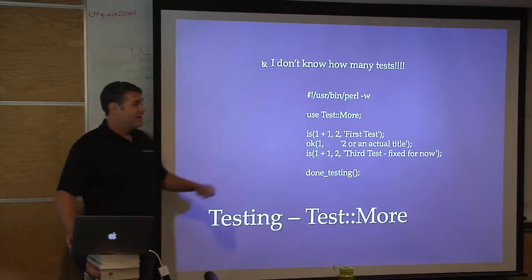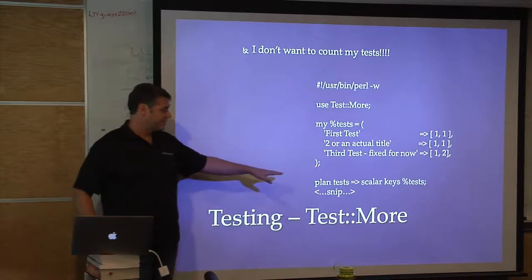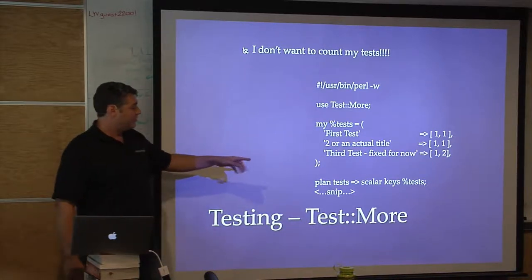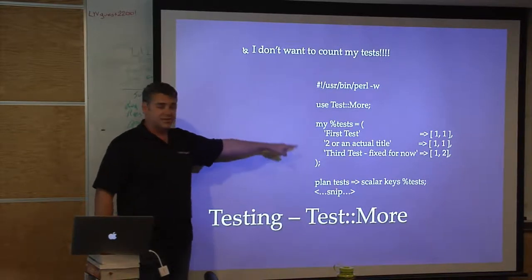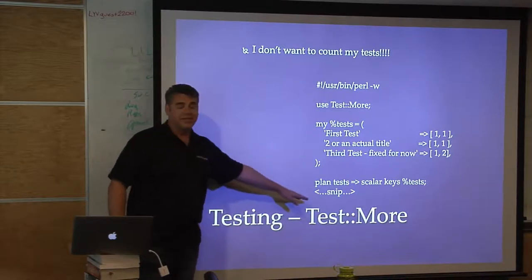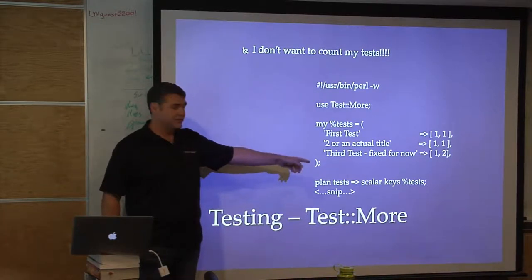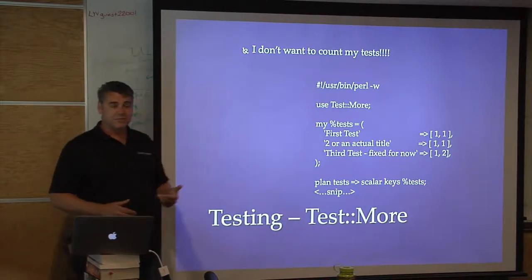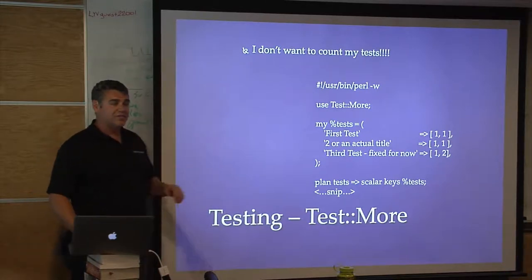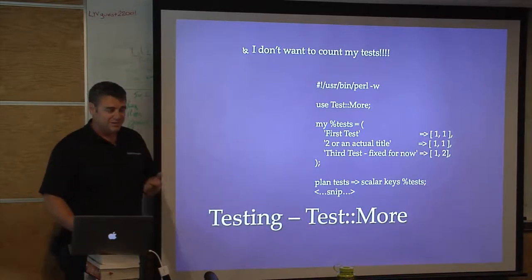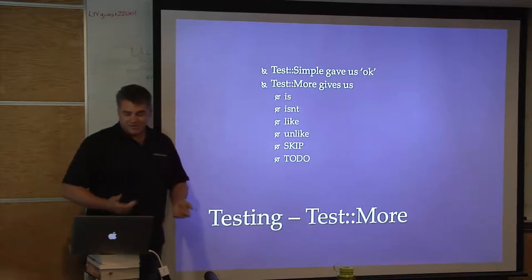Another way is to use plan() dynamically. Here I have a hash of the tests I'm going to run through my suite, with a for loop that executes them all. I just say give me the number of keys in scalar context and that gives me my test count. I can add or remove tests from the hash and that line is always happy. Once stable, I still recommend writing down an explicit number so someone knows you meant it.